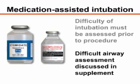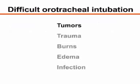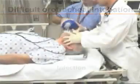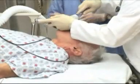This assessment is discussed in more detail in the accompanying written supplement. The presence of tumors, trauma, burns, edema, or infection of the pharyngeal or laryngeal soft tissues may distort airway anatomy, leading to difficult orotracheal intubation. When faced with a potentially difficult airway, consulting with an experienced intubator and preparing to use an alternative intubation technique are recommended.